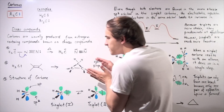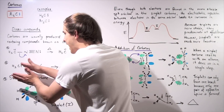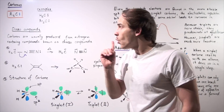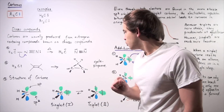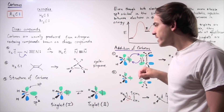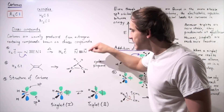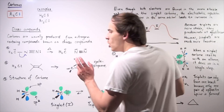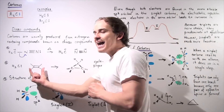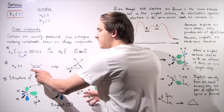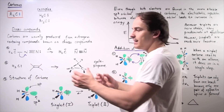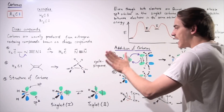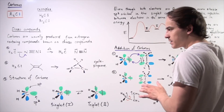Now let's examine the second step. In the second reaction, we show why carbenes are useful. Carbenes can be used to produce cyclopropane rings — three-membered rings in which every atom is a carbon atom. A symmetrical alkene reacts with our carbene molecule to form a cyclopropane molecule.